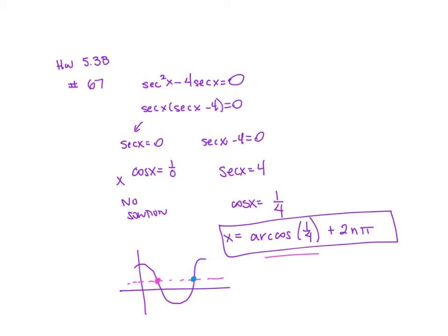If you remember that a period of cosine is 2 pi, think about the distance to arc cosine of one-fourth is here. We need to find the distance from 2 pi here to get to this blue dot.